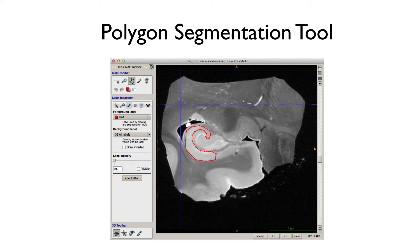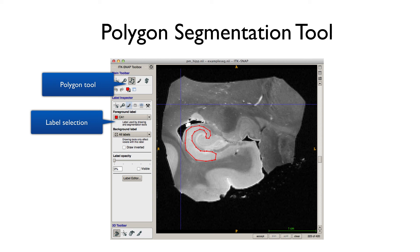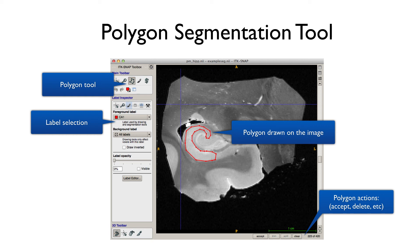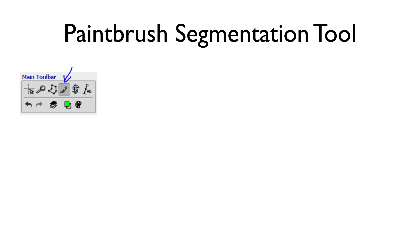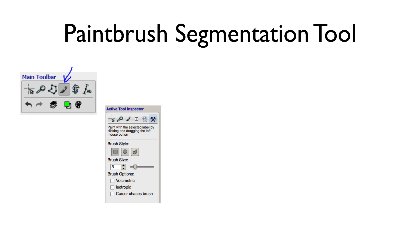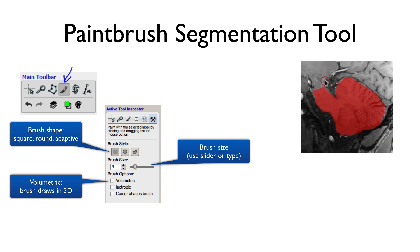With the polygon tool, you select it from the main tool panel, choose your label, draw the polygon, and use buttons like Accept and Delete at the bottom of the window to process it. With the paintbrush tool, you select it from the toolbar and its inspector lets you choose the shape — round, square, or adaptive brush — and the brush size. You can also select whether the brush affects only the 2D slice you're viewing or acts as a volumetric sphere or cube, painting into adjacent slices.